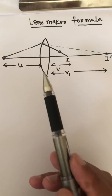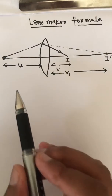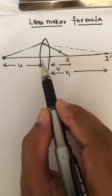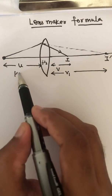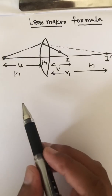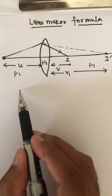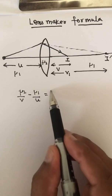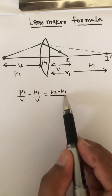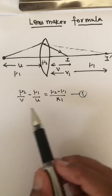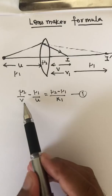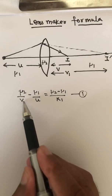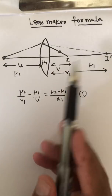Applying the spherical refraction formula for this lens: refractive index of the lens is mu2, and outside medium refractive index is mu1. Applying the formula for the first refraction surface: mu2/v1 minus mu1/u equals mu2 minus mu1 divided by R1. Here v1 is the image distance for the first surface.